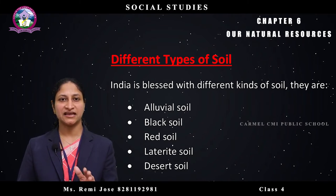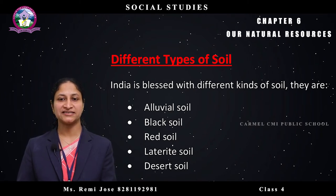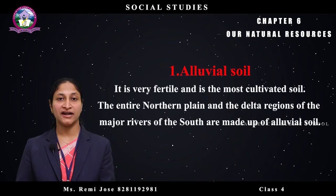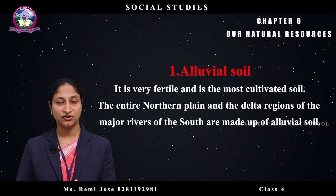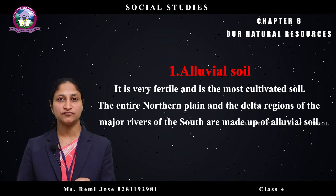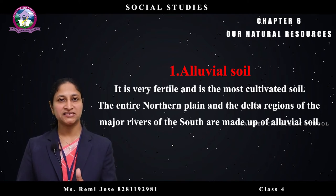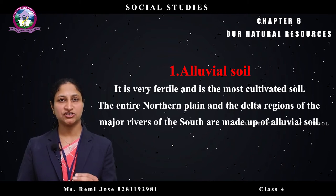Let us discuss these different types of soil one by one. The first one is alluvial soil. The entire northern plain is rich in alluvial soil, which is very fertile and good for crops. Crops such as wheat, rice, millets, pulses, vegetables, cotton, jute, etc. are grown very well in this soil.